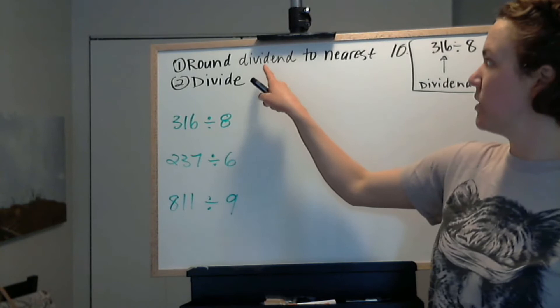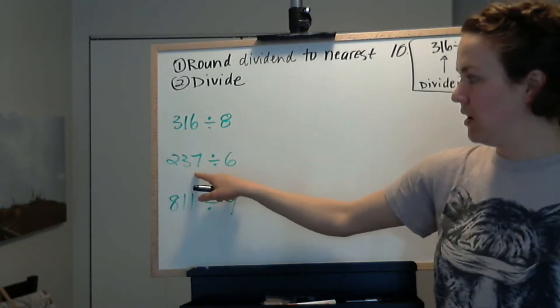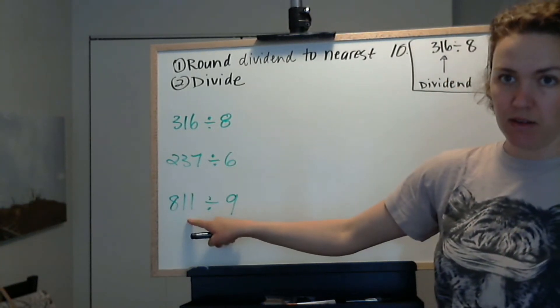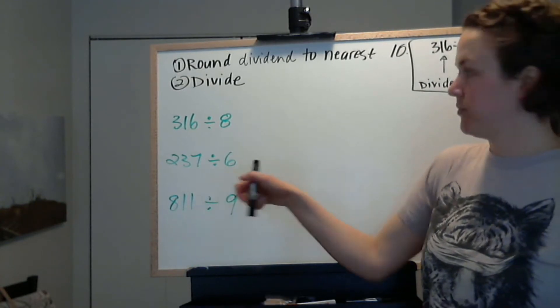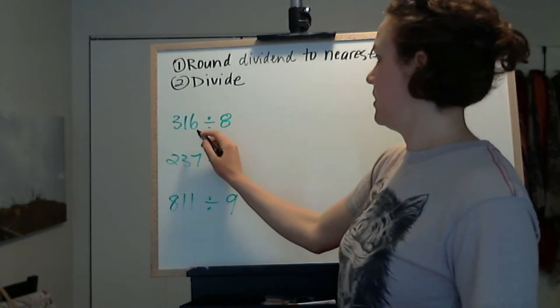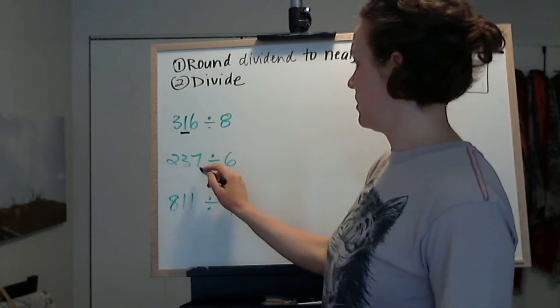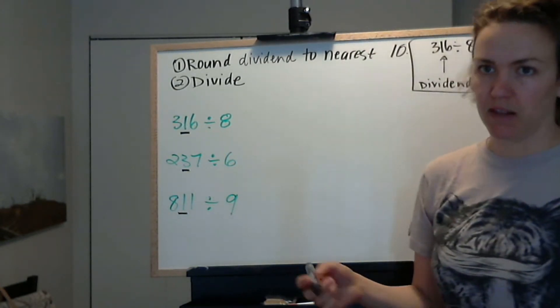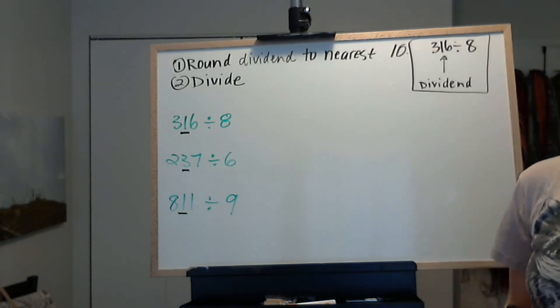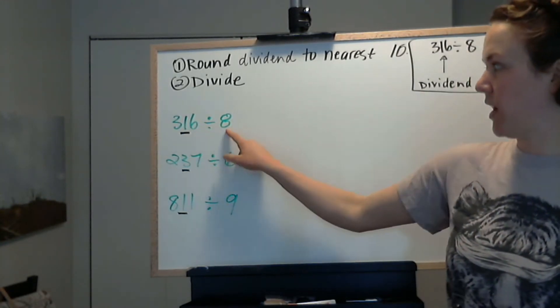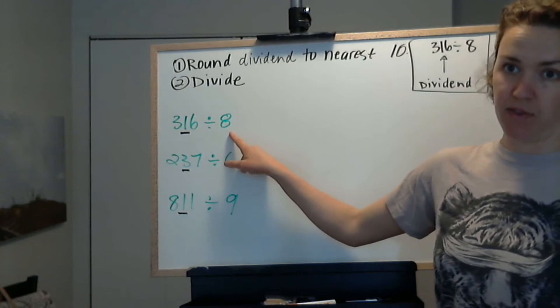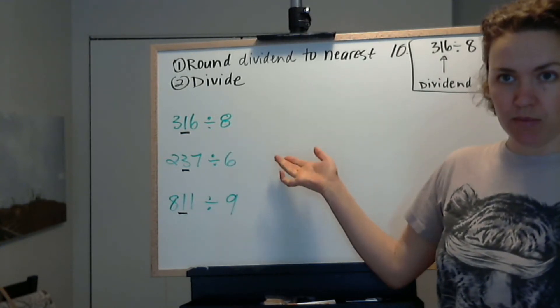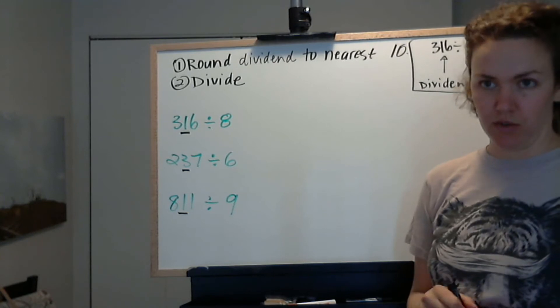First, you round the dividend, which is the first number here, the number that you're dividing, to the nearest 10. So that is this digit, the tens place, and it's the 10 in every question. Then once you've rounded it, you divide it by the divisor. So I will do these three examples, and then you should have a good idea of how to do it.